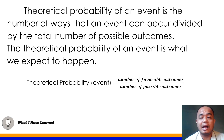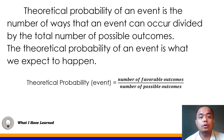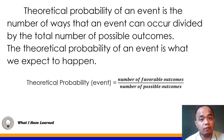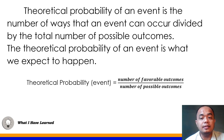We use theoretical probability to predict or expect what will happen — we don't yet have the actual result of an experiment or event. Theoretical probability is just our prediction of the probability or possibility that an event will occur. To solve it, get the number of favorable outcomes and divide it by the total number of possible outcomes.